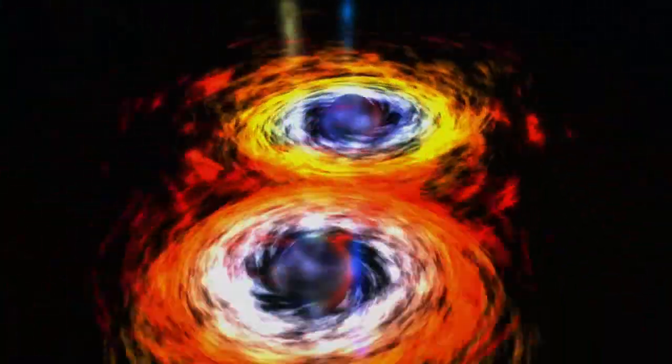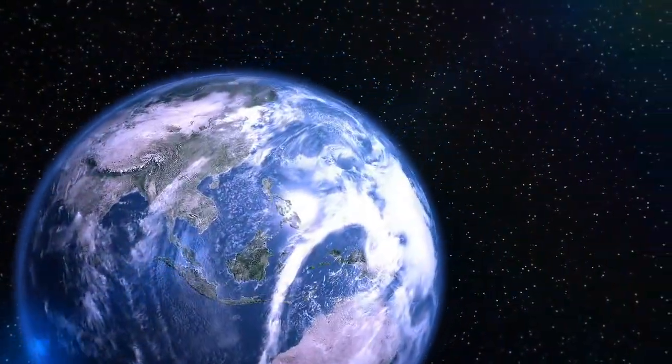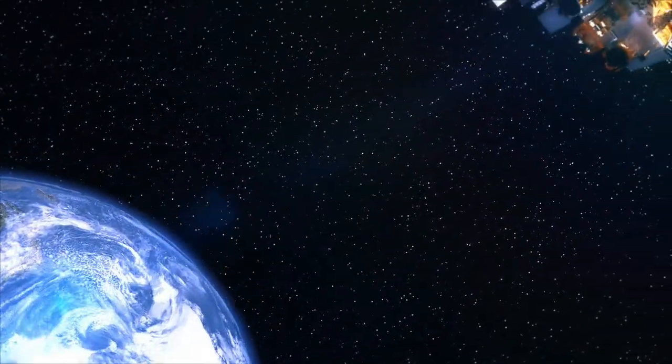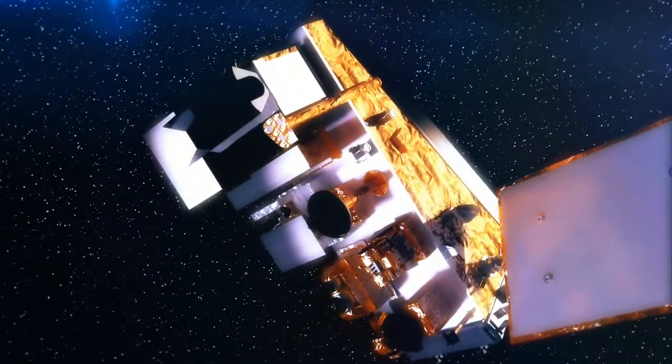Ripples in spacetime caused, for example, by the merger of two black holes. The trick is to actually measure these gravitational ripples. And to do that you need a remarkably precise measuring instrument. You need an atom interferometer.